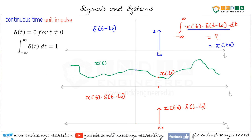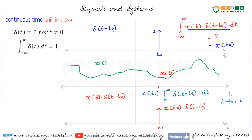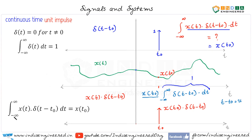If you are not sure, you can try integrating this. The integral from minus infinity to infinity of x(t₀)·δ(t − t₀) dt — since x(t₀) is not a function of t, we can take it outside. All we need to do is a change of variable: let t − t₀ = u, and solve the integral. Finally, we get x(t₀) times 1, which equals x(t₀). So the integral from minus infinity to infinity of x(t)·δ(t − t₀) dt equals x(t₀).